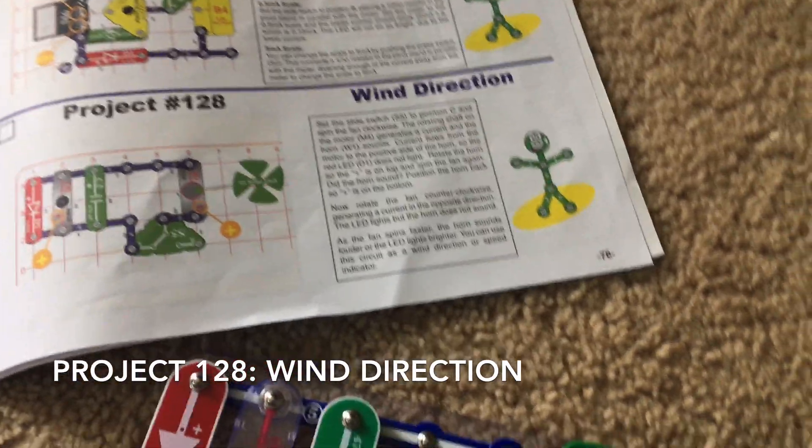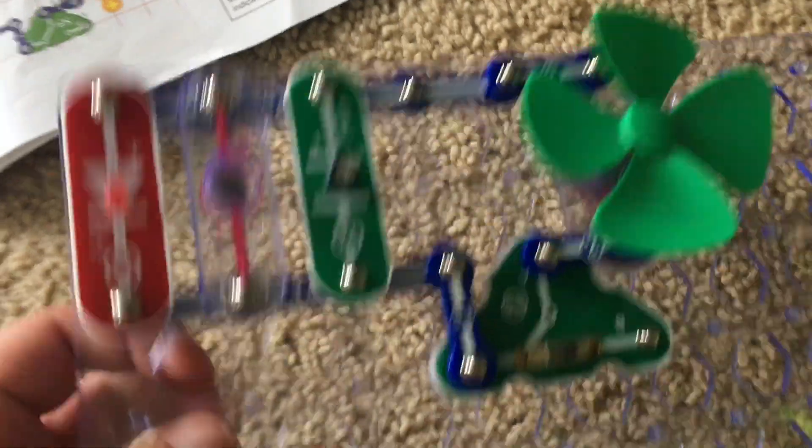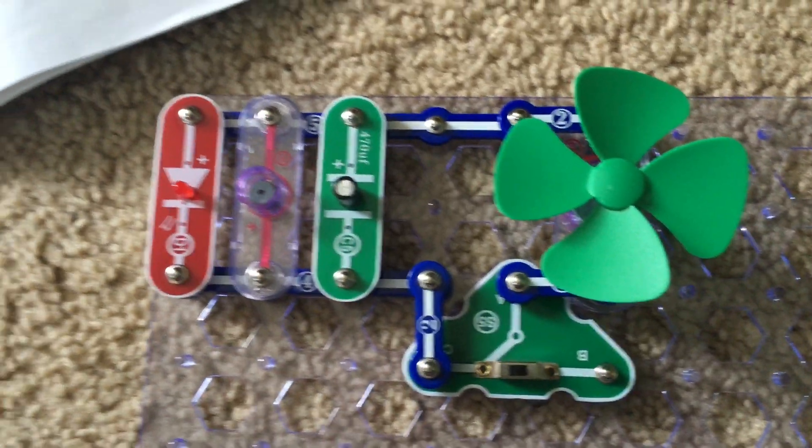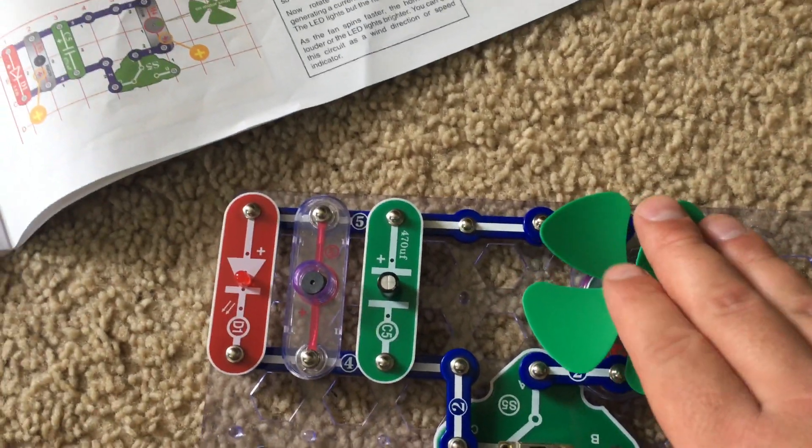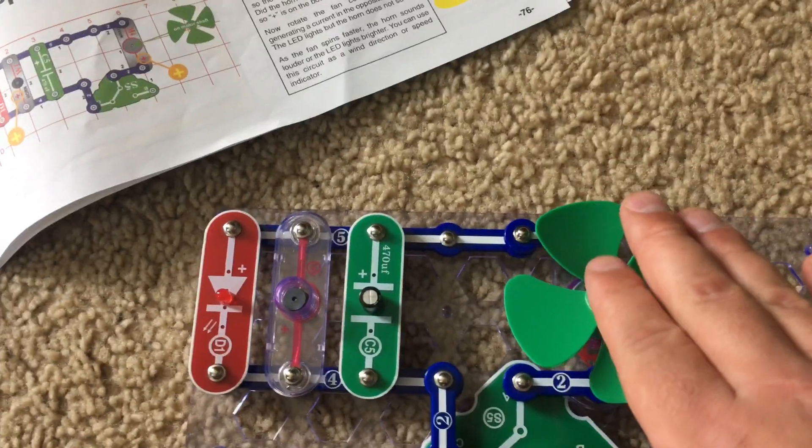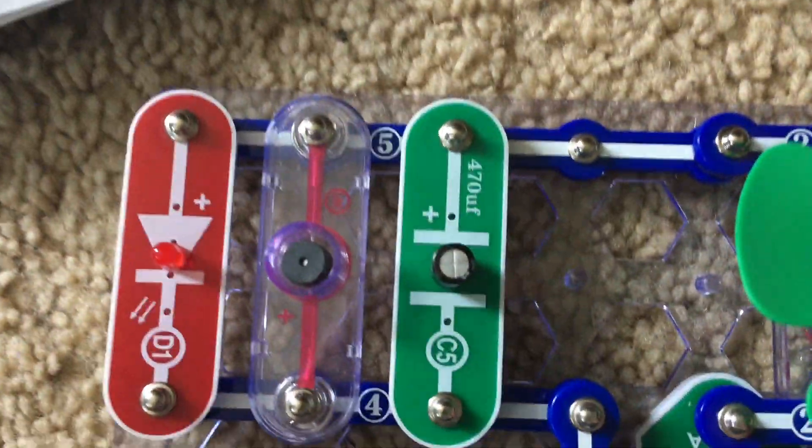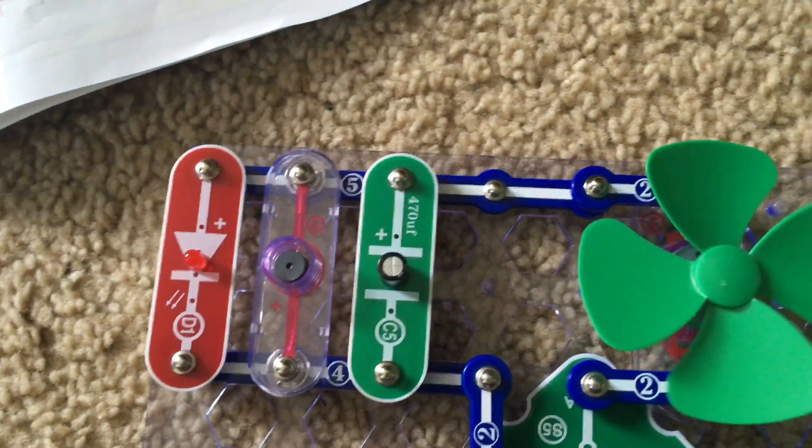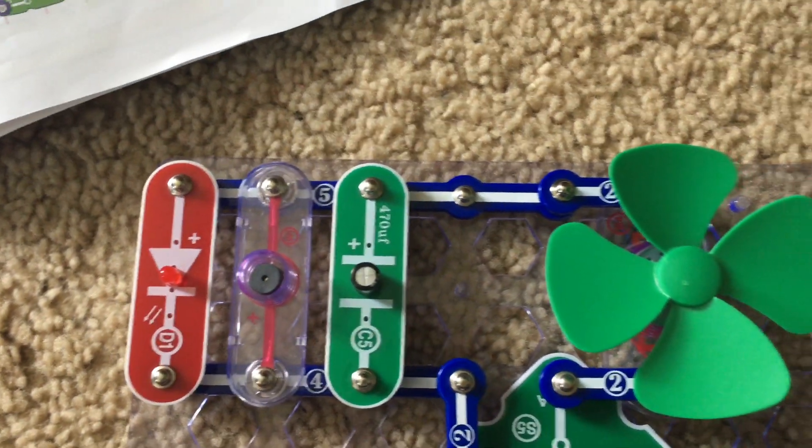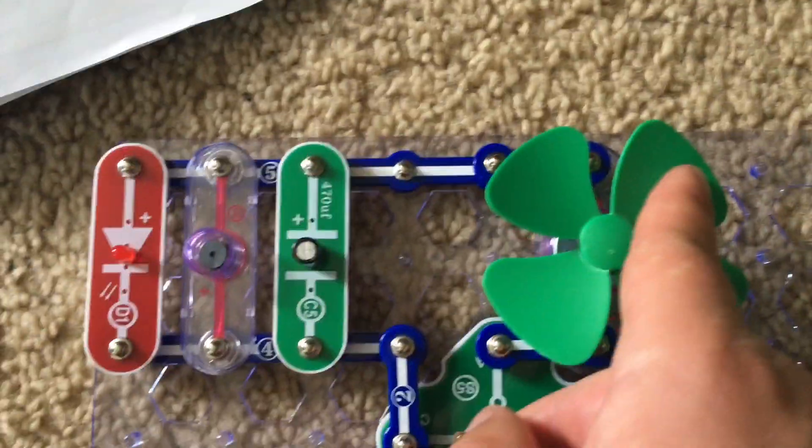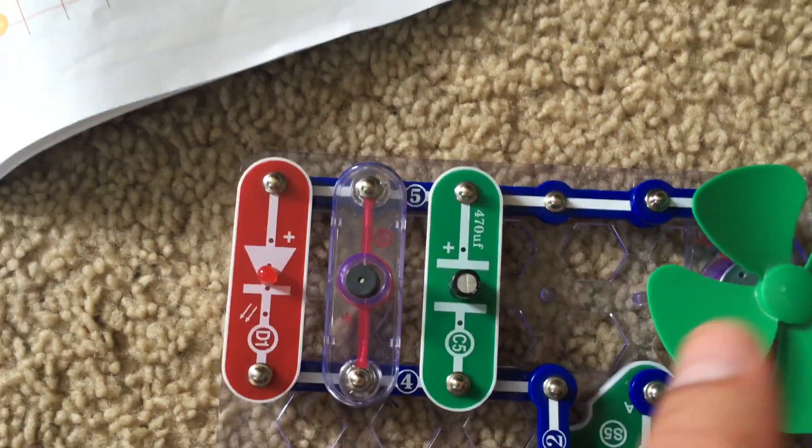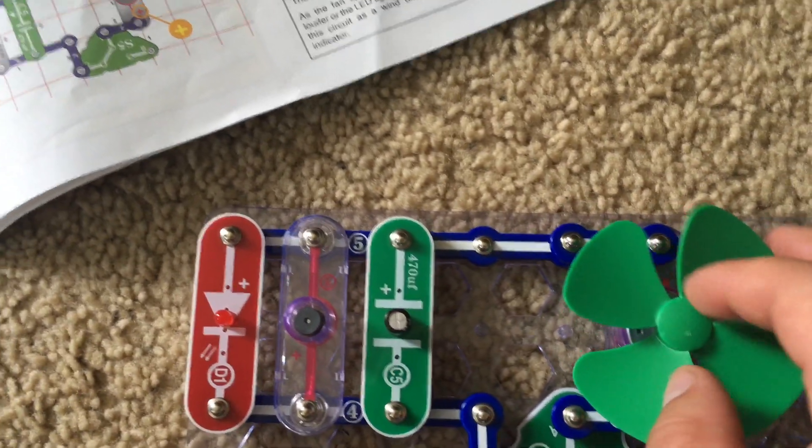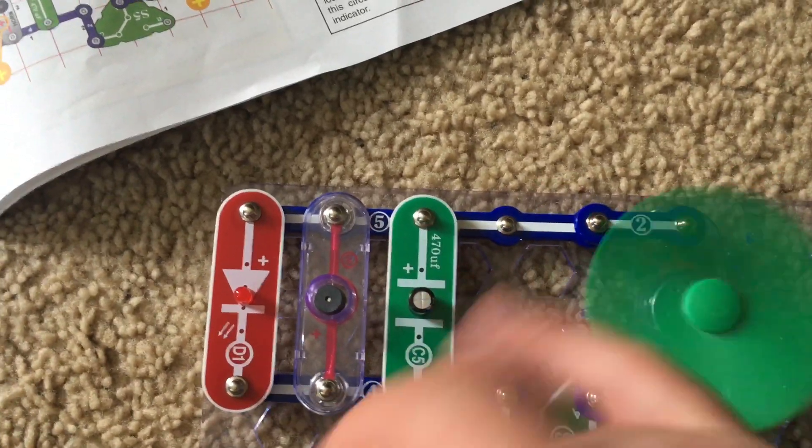Project 128 is wind direction. This circuit can be used to indicate the direction that the wind is blowing. When you turn the switch to position C and you turn the fan clockwise, or if there is a wind blowing in that direction, the horn will sound if it is spinning fast enough. However, I only was able to do it once. If I was to rotate the fan counterclockwise, the red LED would light, although the horn would not sound. Only one of these components activates when the fan is spinning in either direction, so that indicates the direction of the wind.